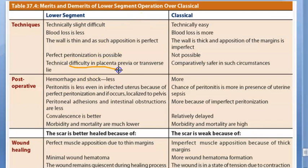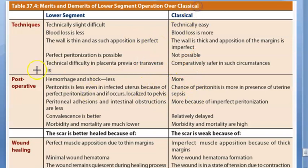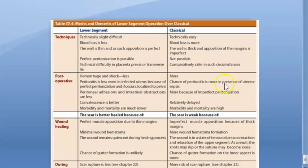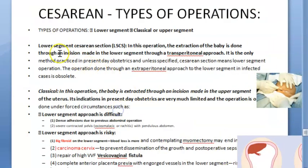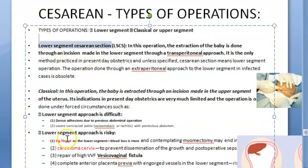Classical is technically easier, which is why it's done in emergencies — especially when there is maternal mortality risk and they need to get the baby out quickly, without concern for future pregnancies. Everything else favors lower segment, except when there is placenta previa or a transverse lie, which creates technical difficulty. Lower segment cesarean section is the most commonly performed.